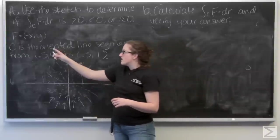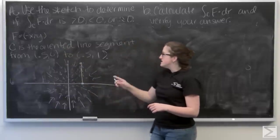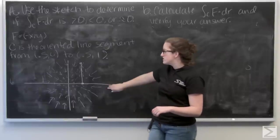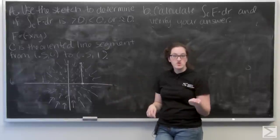And I'm given f equals negative x, negative y. c is the oriented line segment from (0.5, 0) to (0.5, 1). So this is my recreation of the sketch given to you in the book.